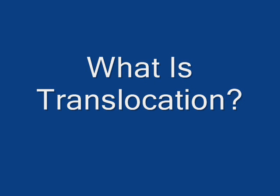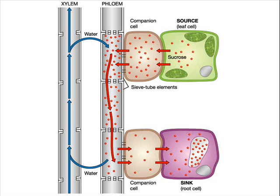Translocation is the transport of assimilates through the plant in the phloem tissue. Sugars are transported in the phloem in the form of sucrose, and this describes the movement of sucrose along the phloem.